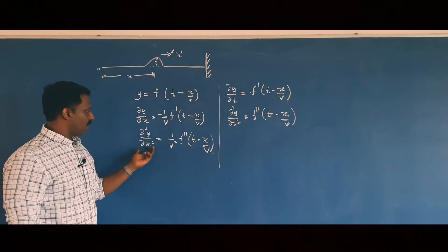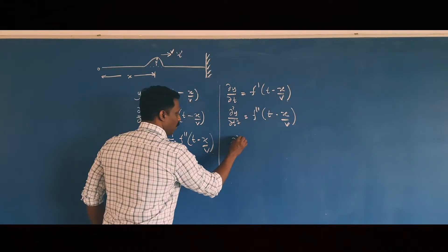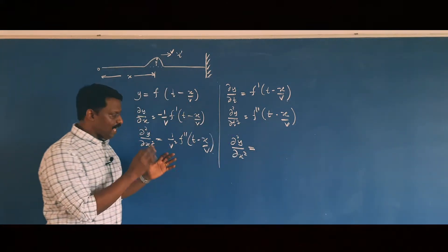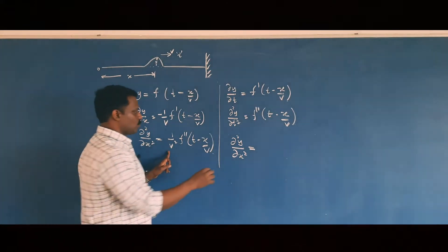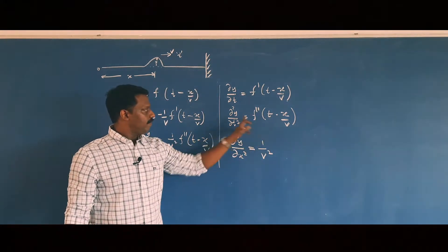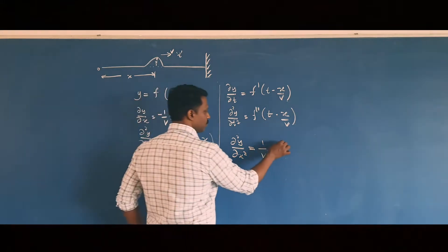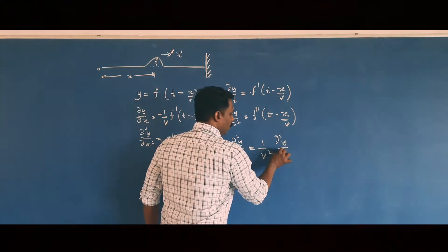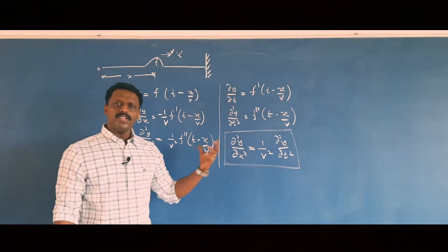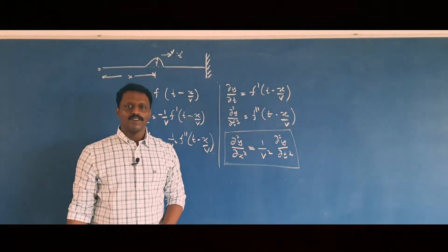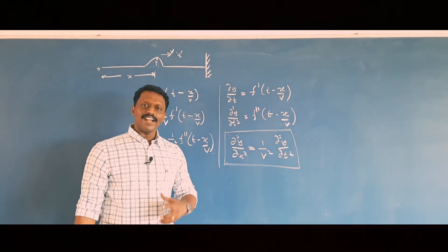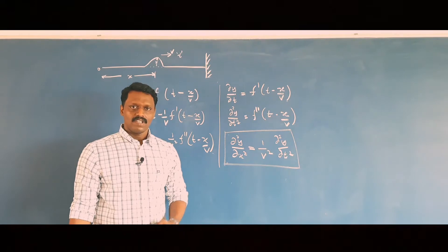Rewriting the equation: ∂²y/∂x² = (1/v²) × ∂²y/∂t². This is the differential equation of a wave in one dimension. Now let us generalize this equation.